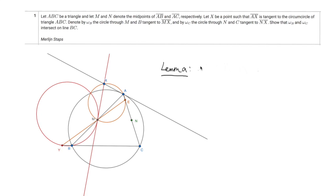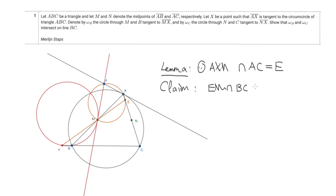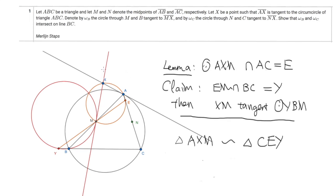The lemma is the following. We draw a circle passing through points A, X, and N, and this circle intersects line AC at a point E — this is the orange circle. The claim is that if we draw the line EM, which intersects BC at a point Y, then Y is the point we are looking for.